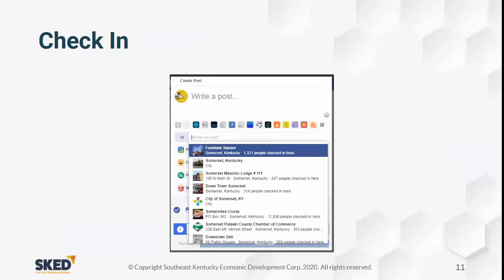You can also check in. If I chose BeBoss Online — our page is in Somerset, Kentucky — these are the first locations that showed up: Fountain Square in downtown Somerset, the city of Somerset, downtown Somerset Deli, and the Pulaski County Chamber of Commerce. These are ways to show where you are as an organization, and it also helps the place you check into because it shows up on their page as well, giving both of you more visibility and engagement.